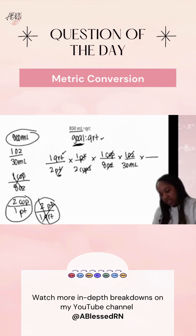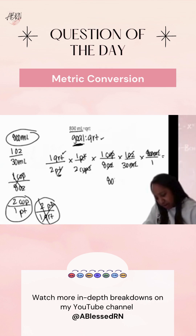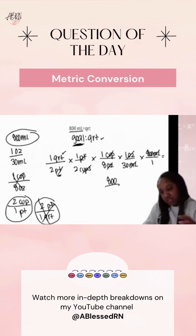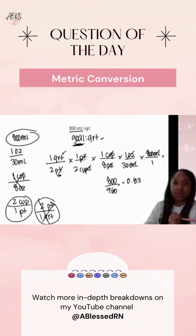My last puzzle piece is my 800 milliliters. We'll do all across the top: one times one times one times one is 800. Then we'll do two times two times eight times 30, which is 960. So 800 divided by 960 is 0.8333 repeating.